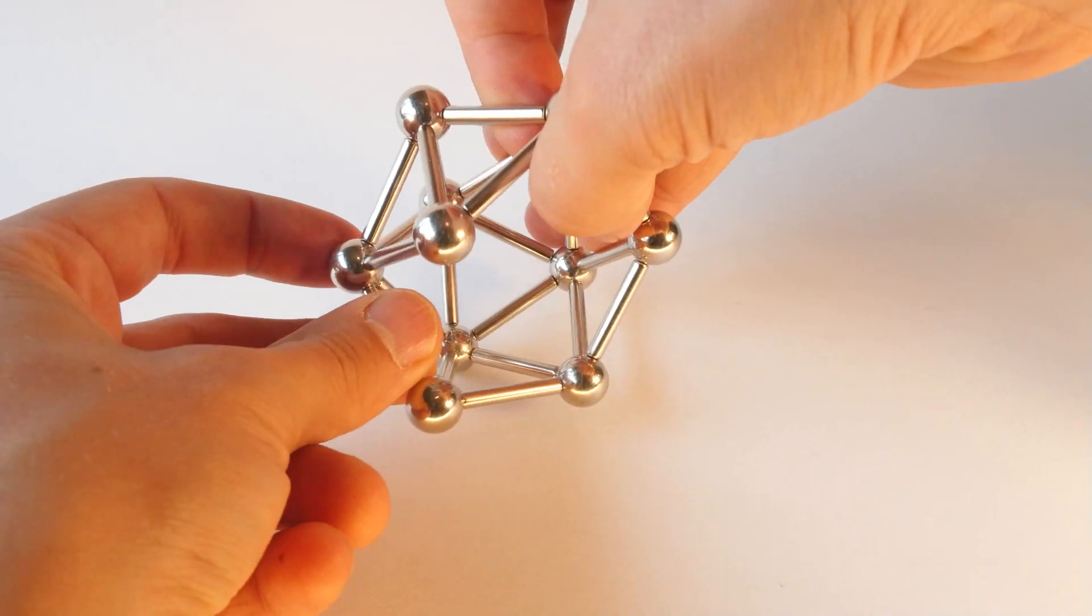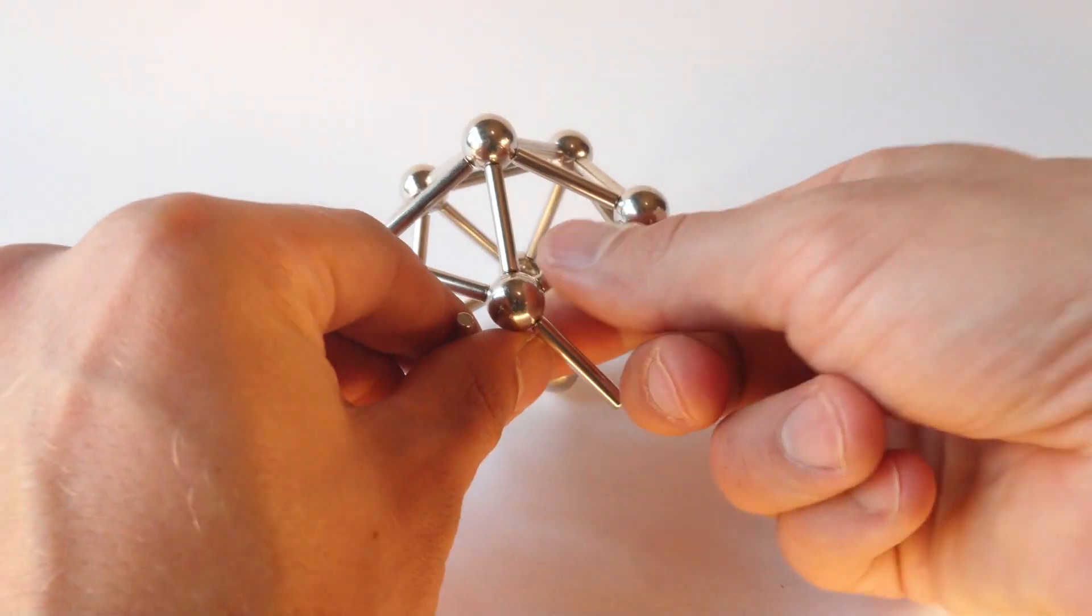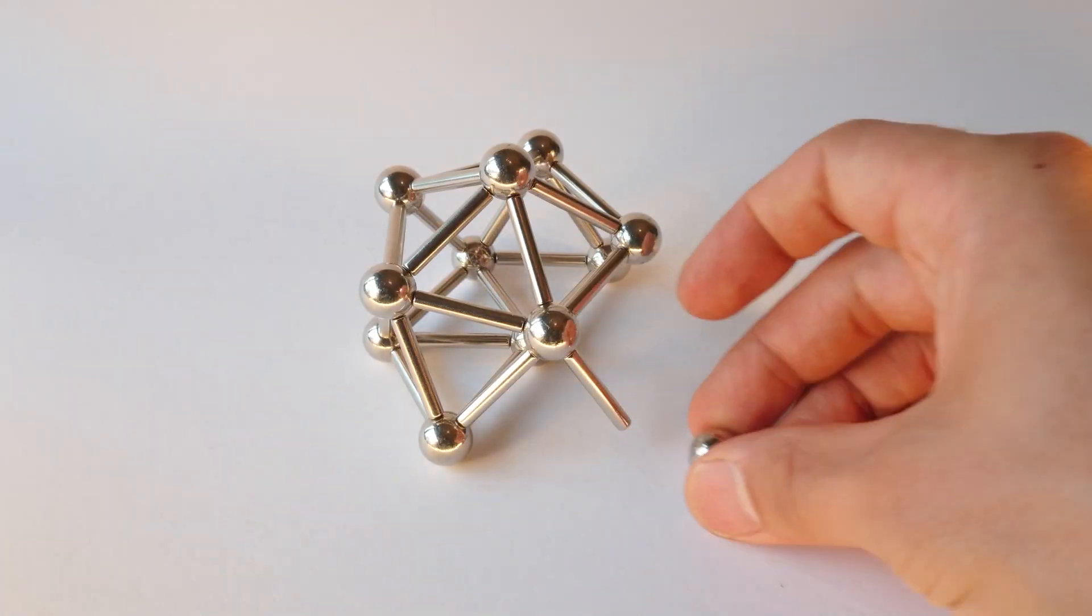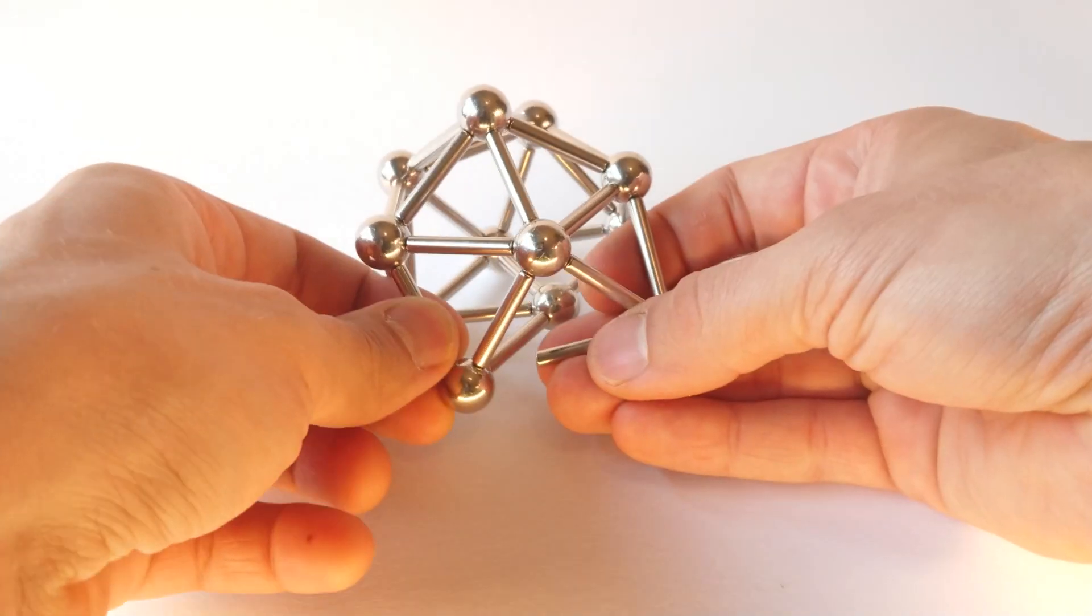In the natural world, icosahedron is the shape favored by a number of viruses, including the infamous herpes virus.